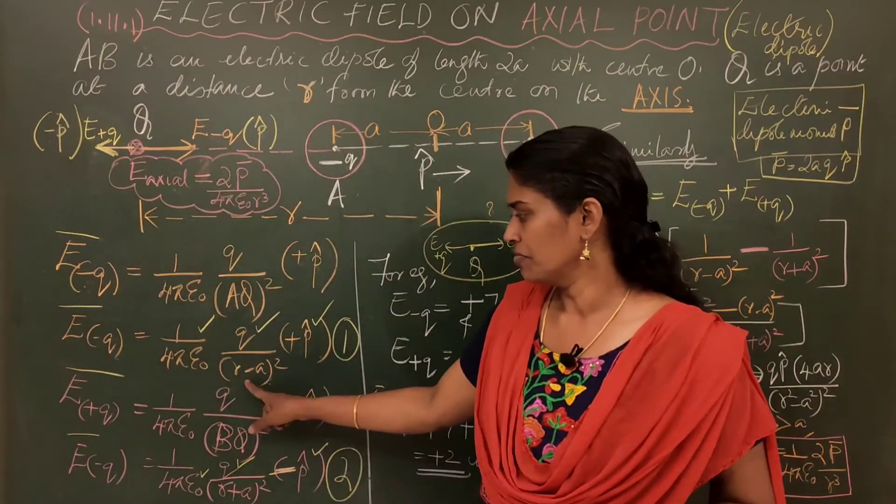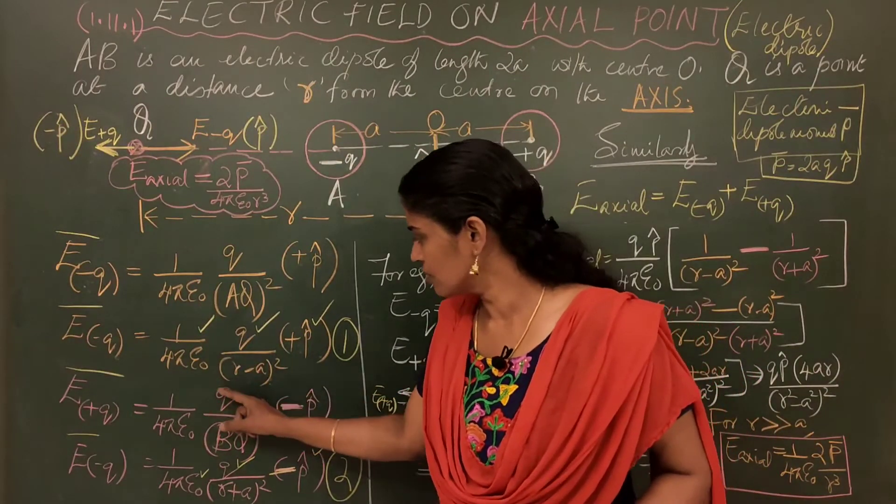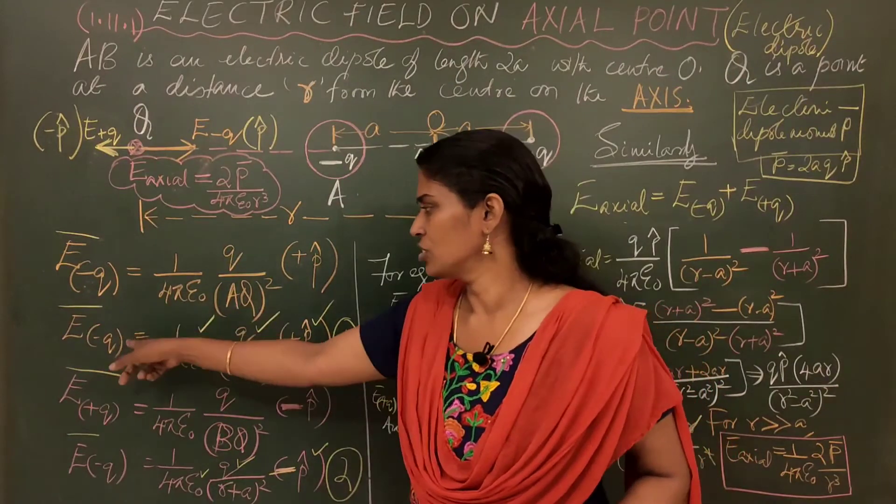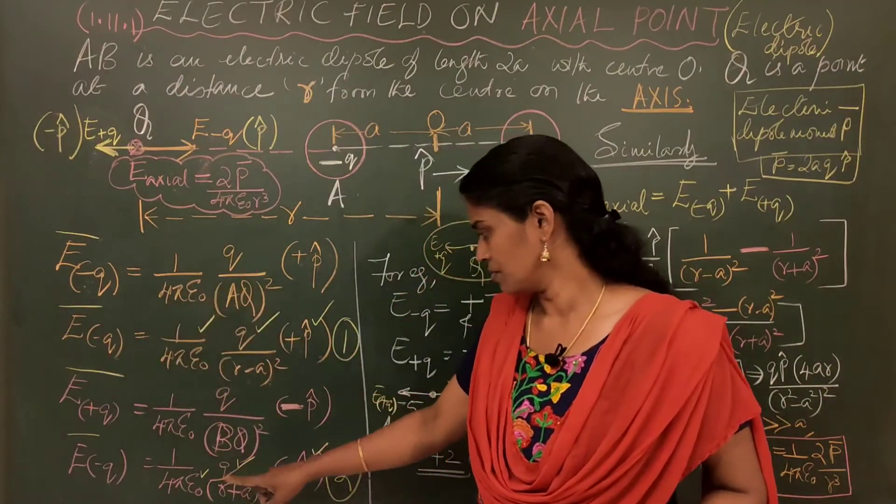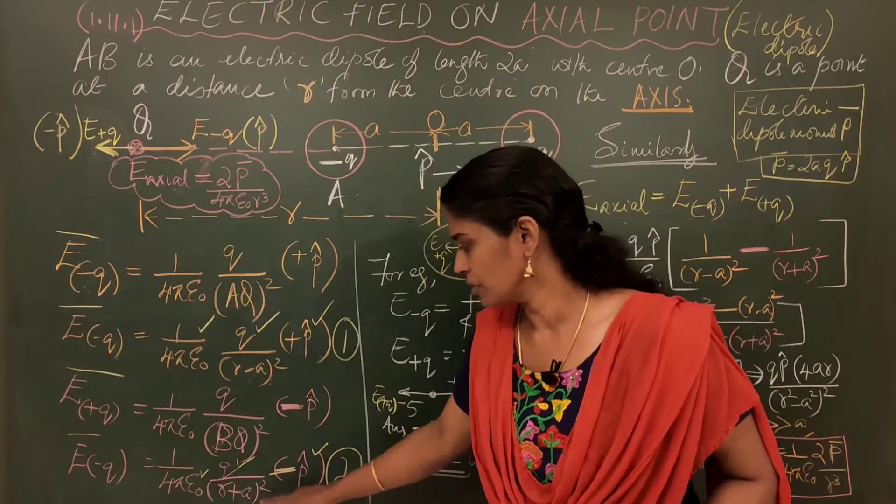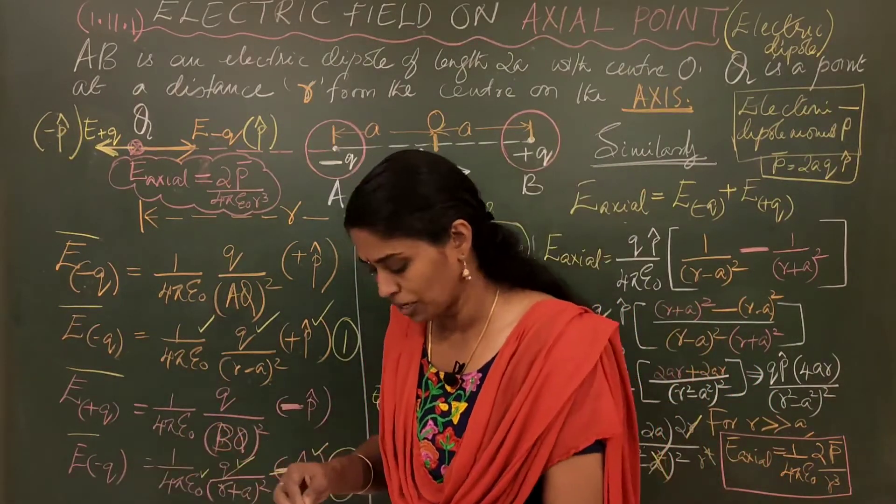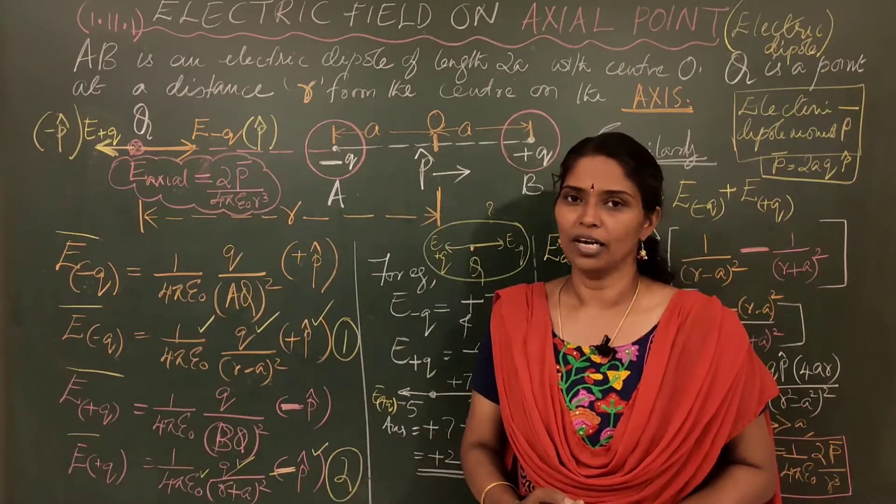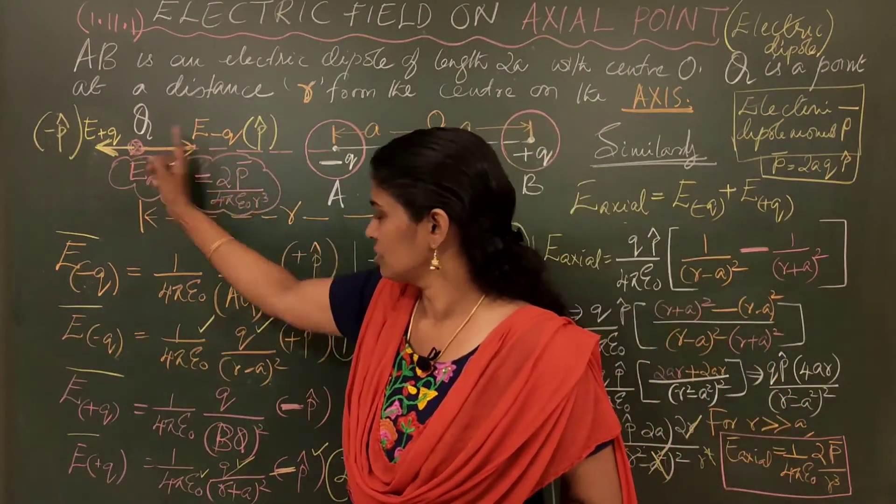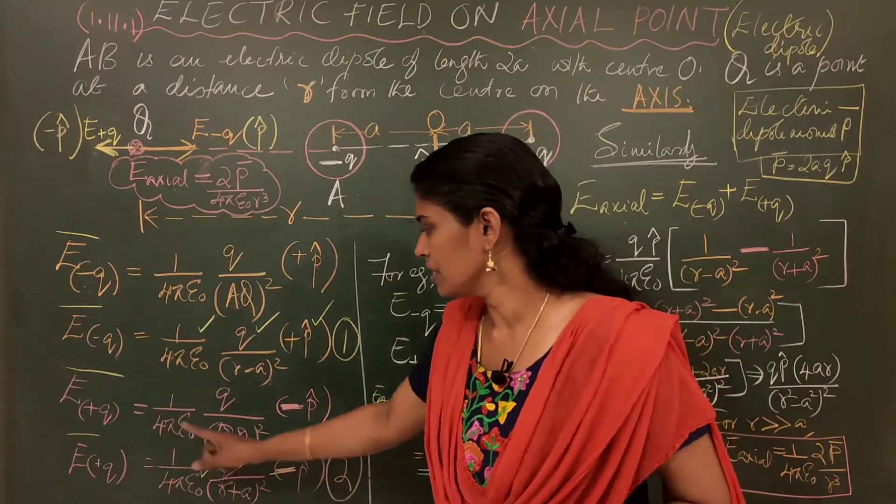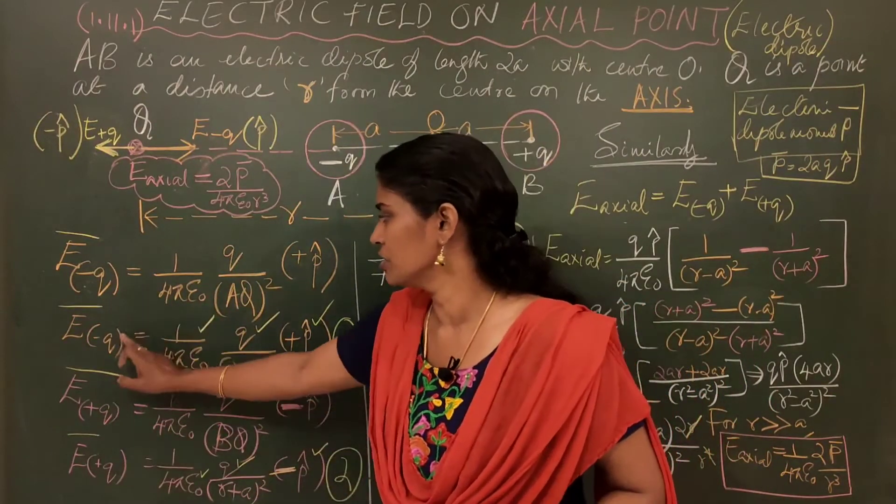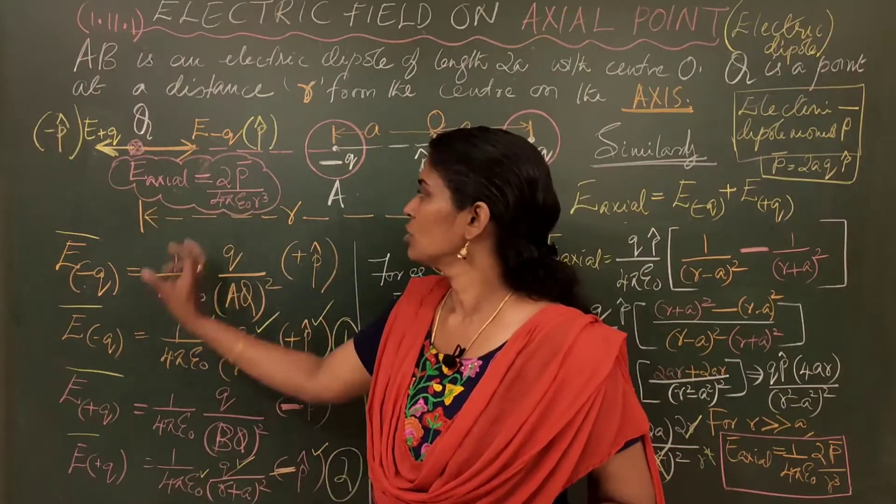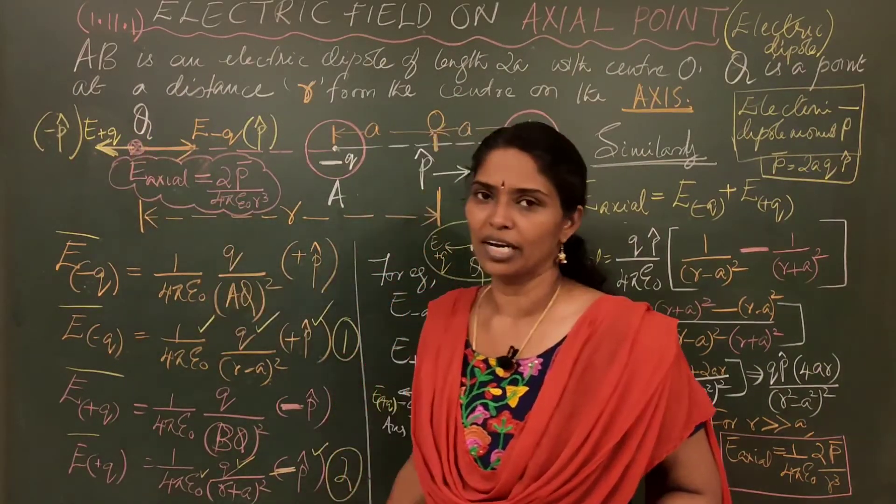This shows that magnitude of E minus Q is much greater than that of E plus Q. Just because look at this equation. This is R minus A at the denominator means if this is small, this is higher value. The reverse here R plus A is much bigger value. So, E plus Q will be a smaller value. So, from this figure it's very clear when this is big, this is small, this is small, this is big. So, E minus Q is much greater than E plus Q. Here you have a bigger arrow. Here you have a smaller arrow.